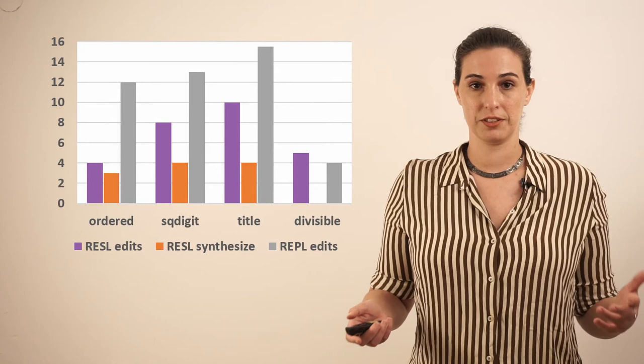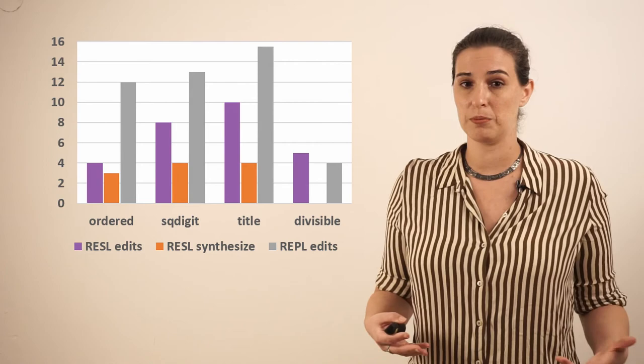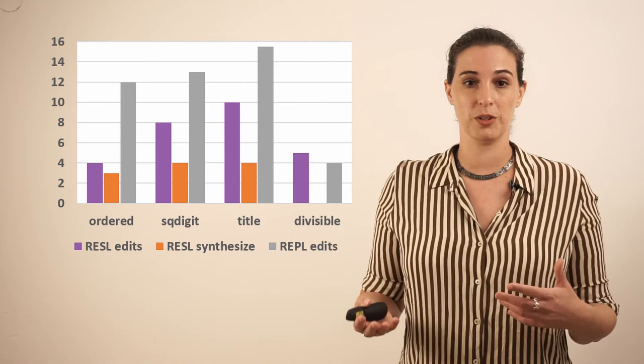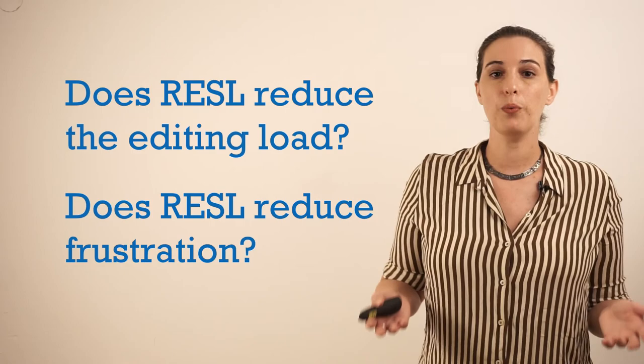In three out of four tasks, synthesis meant a big reduction in iterations where the user entered a program, replaced by calls to the synthesizer. In the fourth task, synthesis was not that helpful, so a median of zero synthesis calls in completing the task also meant not so much difference in the number of edits. And in two out of the four tasks, RESL synthesizer took care of more than half of the code. So it did pretty well in reducing the editing load.